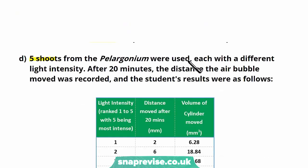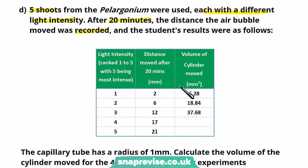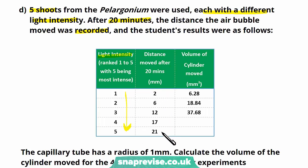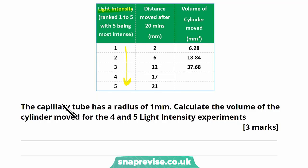Part D: five shoots from the Pelargonium were used, each with a different light intensity. After 20 minutes the distance the air bubble moved was recorded. Always look at the table and analyse it properly before they ask you anything about it. Light intensity is the independent variable, ranked one to five with five being the most intense. As we go down, the bubble has moved more, which is what we'd expect. The table also shows the volume of water moved, calculated from the distance using the tube's radius.